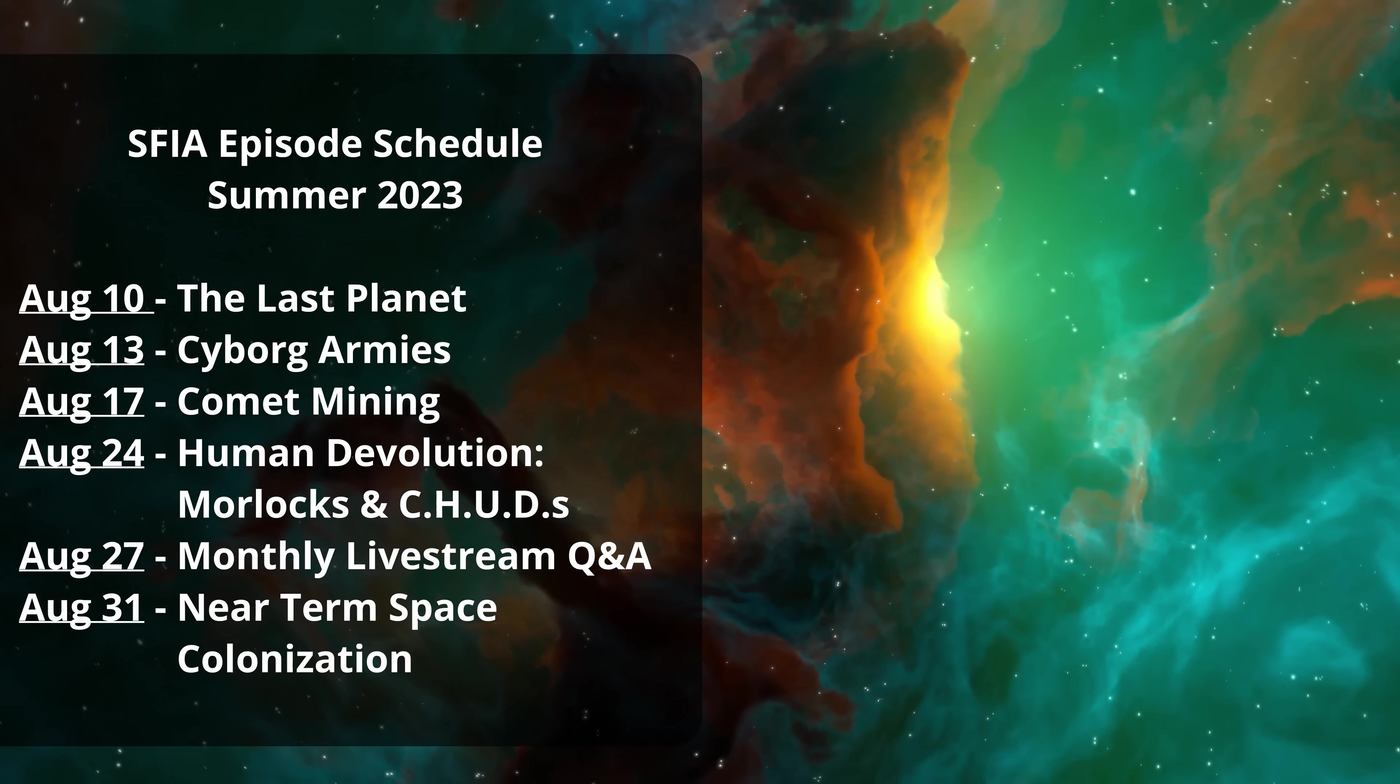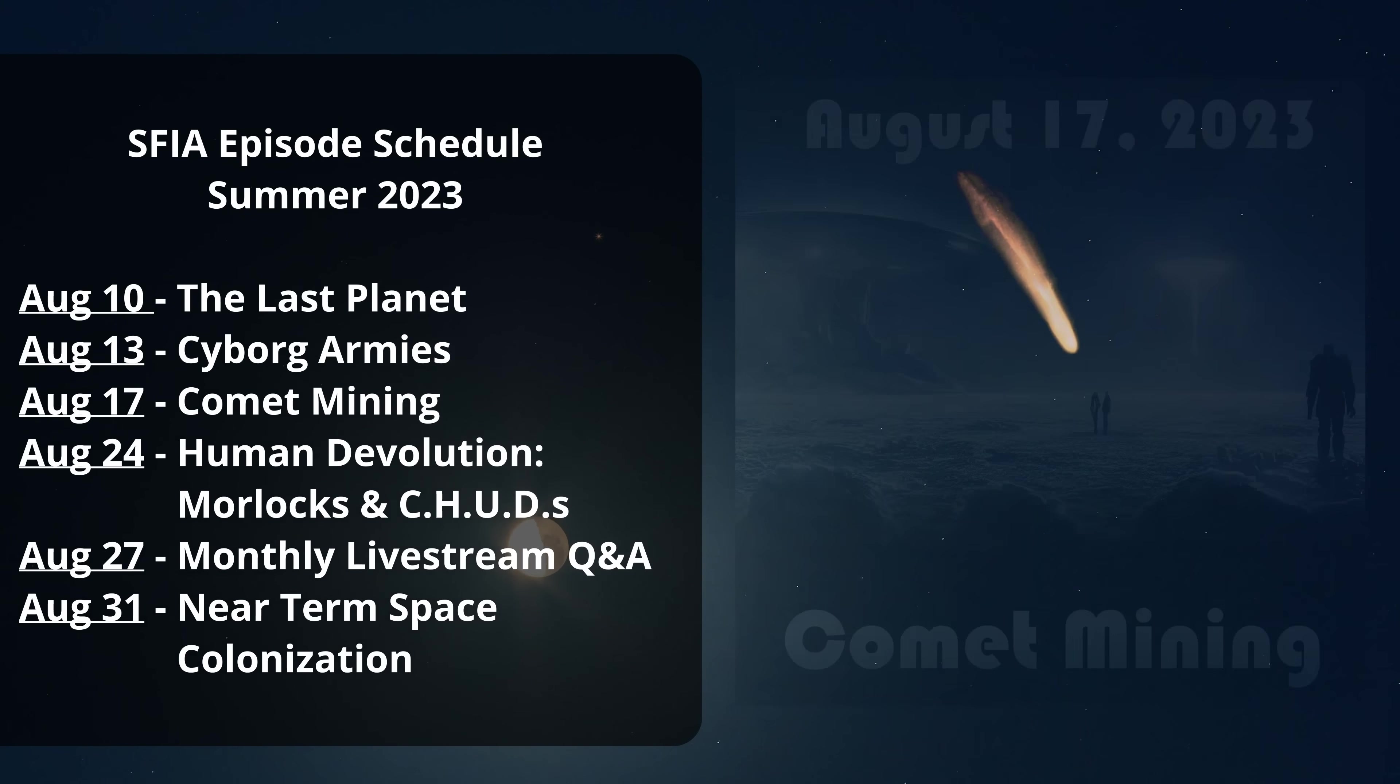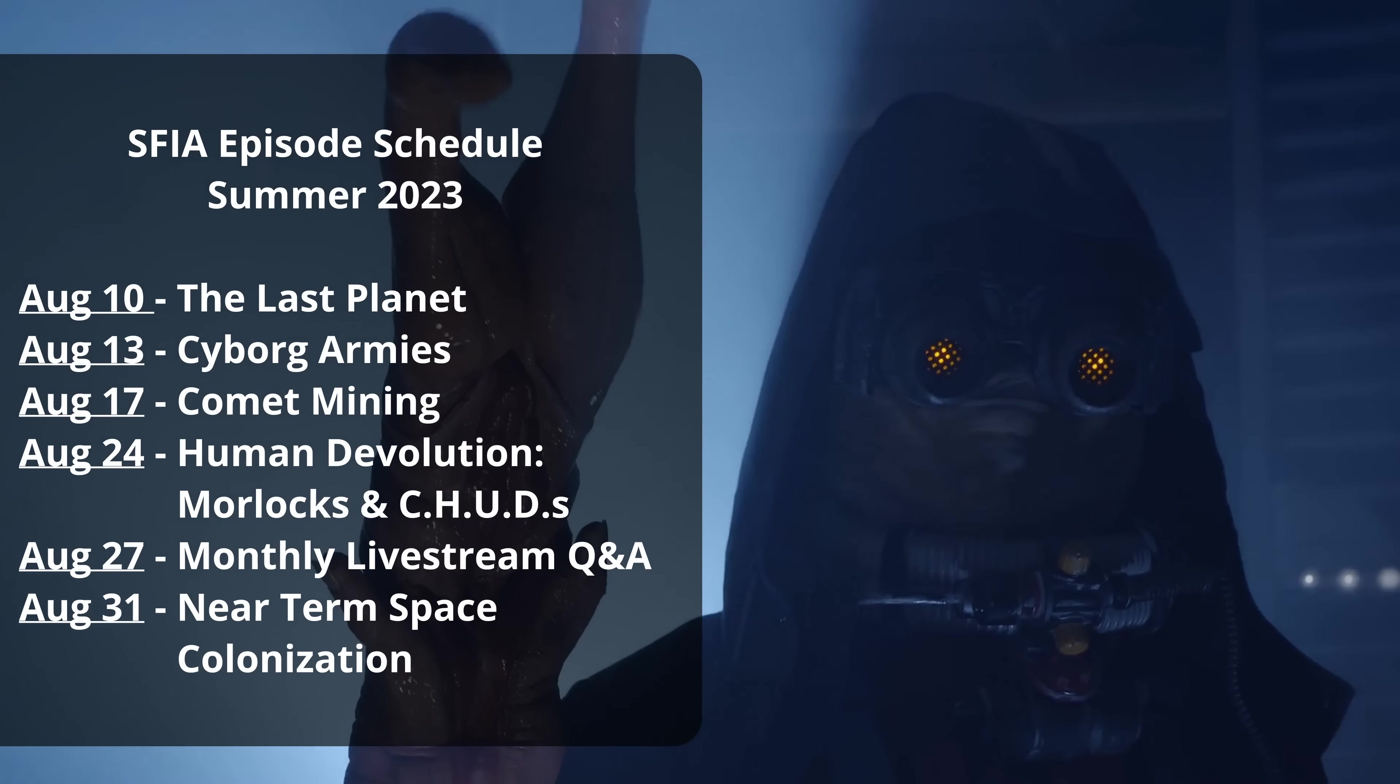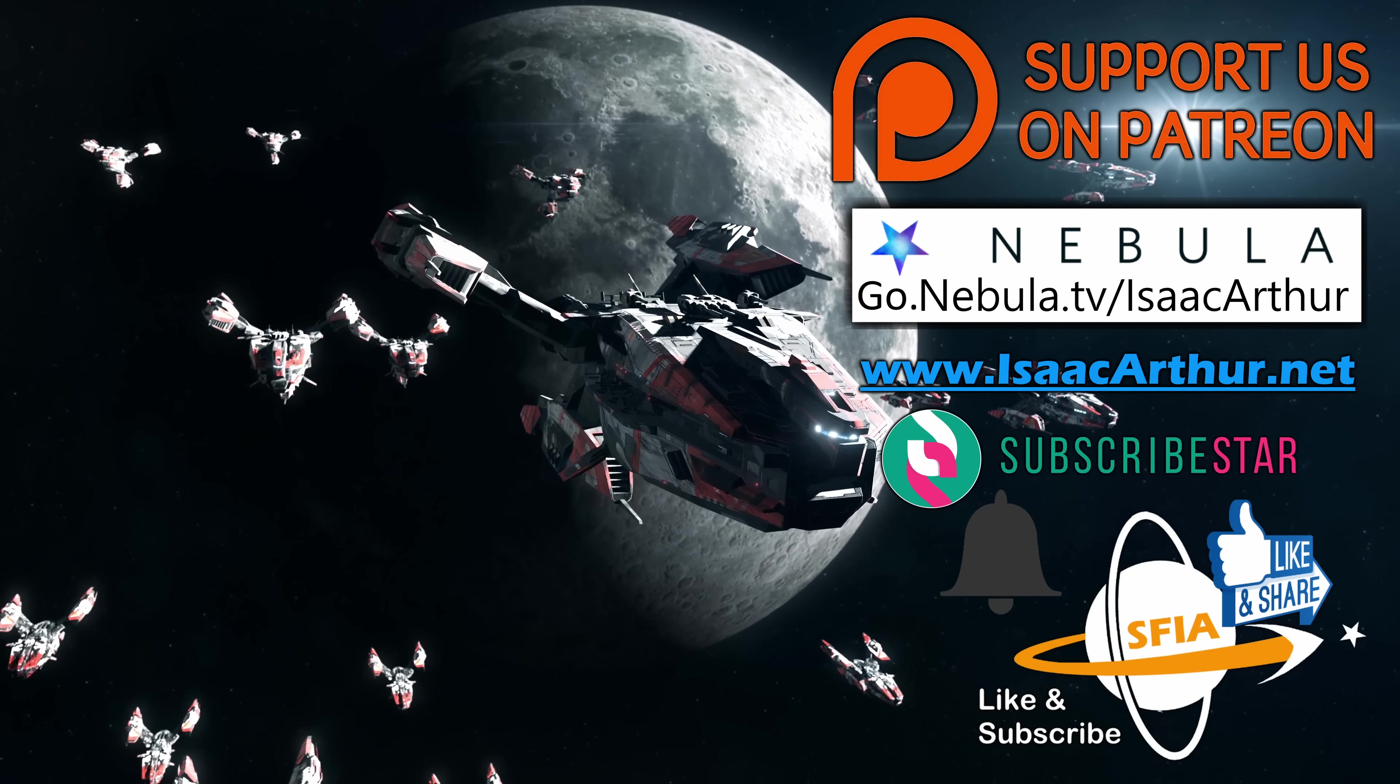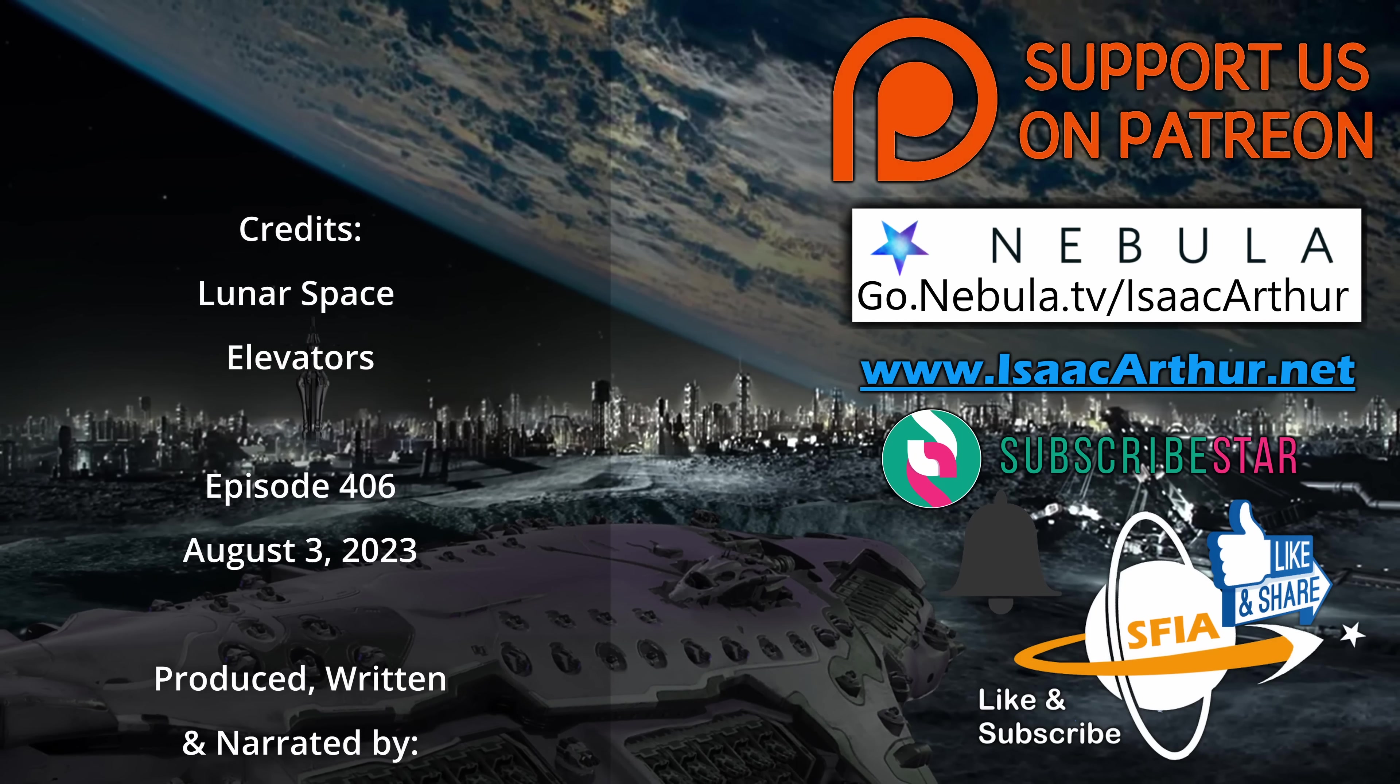So that'll wrap us up for today, but we're just getting started for August, and next week we'll head trillions of years into the future to the end of time and the final twilight on the last planet. Then it'll be time for our monthly Sci-Fi Sunday on Cyborg Armies, followed by exploring where we might get water and other volatiles in space with comet mining. After that, we'll look at the concept of devolution, and ask if fictional mutant degenerates like Morlocks and Chuds might be possible in our future. If you'd like to get alerts when those and other episodes come out, make sure to hit the like, subscribe, and notification buttons. You can also help support the show on Patreon, and if you want to donate and help in other ways, you can see those options by visiting our website, IsaacArthur.net. You can also catch all of SFIA's episodes early and ad-free on our streaming service, Nebula, along with hours of bonus content at go.nebula.tv/IsaacArthur. As always, thanks for watching, and have a great week.